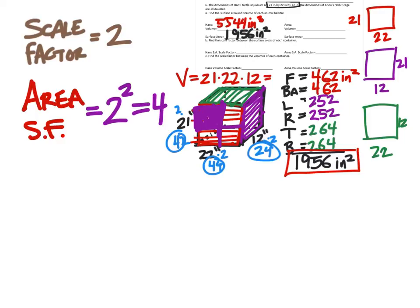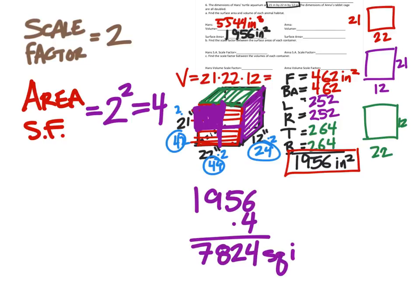In other words, if I take Hans's surface area, which is nineteen-fifty-six, and I multiply it by four, I will have Anna's surface area as well. I'm going to do that, and I get Anna's surface area is 7,824 square inches.